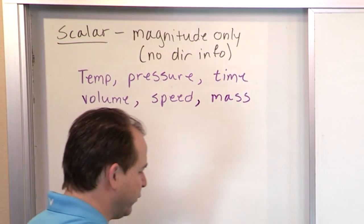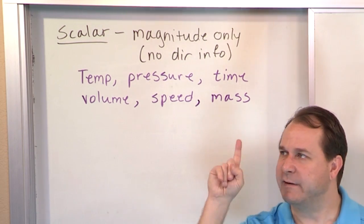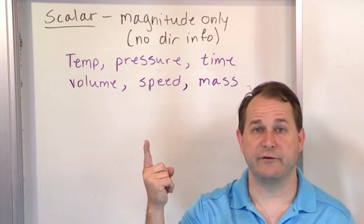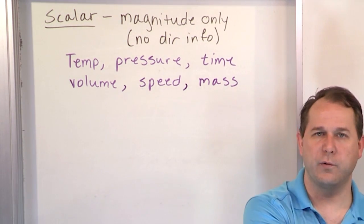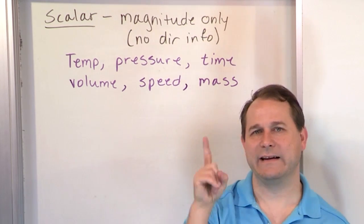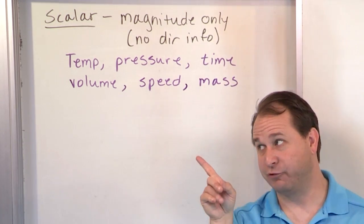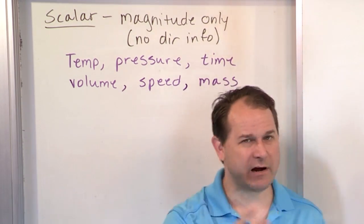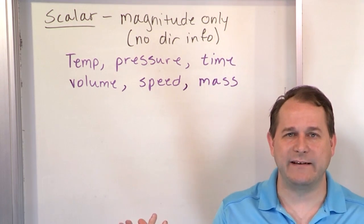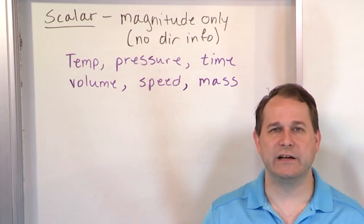Another example is mass — the mass of an object. So let's go through these quickly. If you have the temperature at a point in space, it might be 27 degrees Celsius here and 34 degrees Celsius over there. Those temperatures are different, but there's no directionality to temperature. Which way is temperature pointing? It's not pointing any particular direction. We just know this point in space has a temperature, and that's just a number — a magnitude.